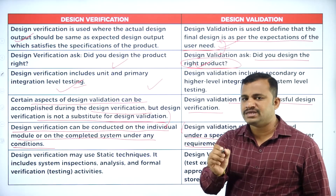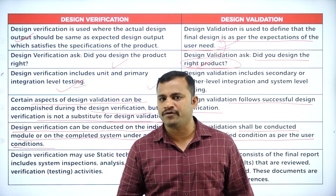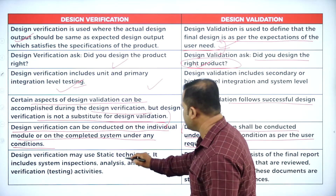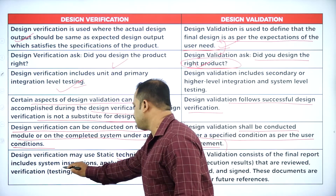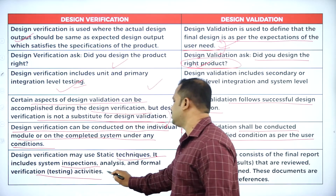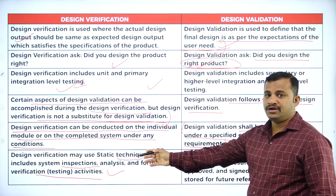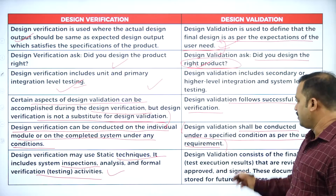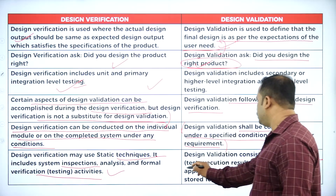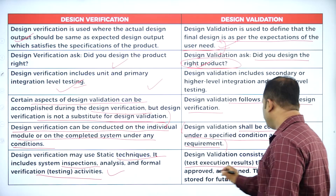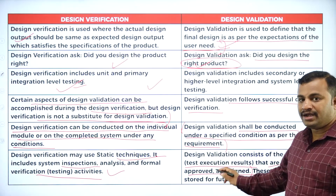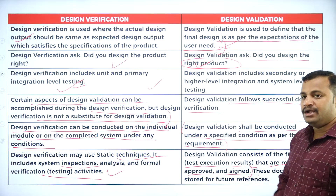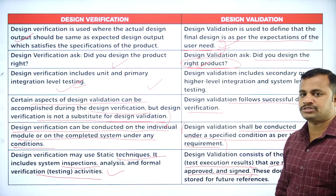If there is any exception arising out of it, everything is checked and verified by the tester. Design verification may use static techniques including system inspections, analysis, and formal verification testing activities. Validation consists of final report test execution results that are reviewed, approved, and signed.